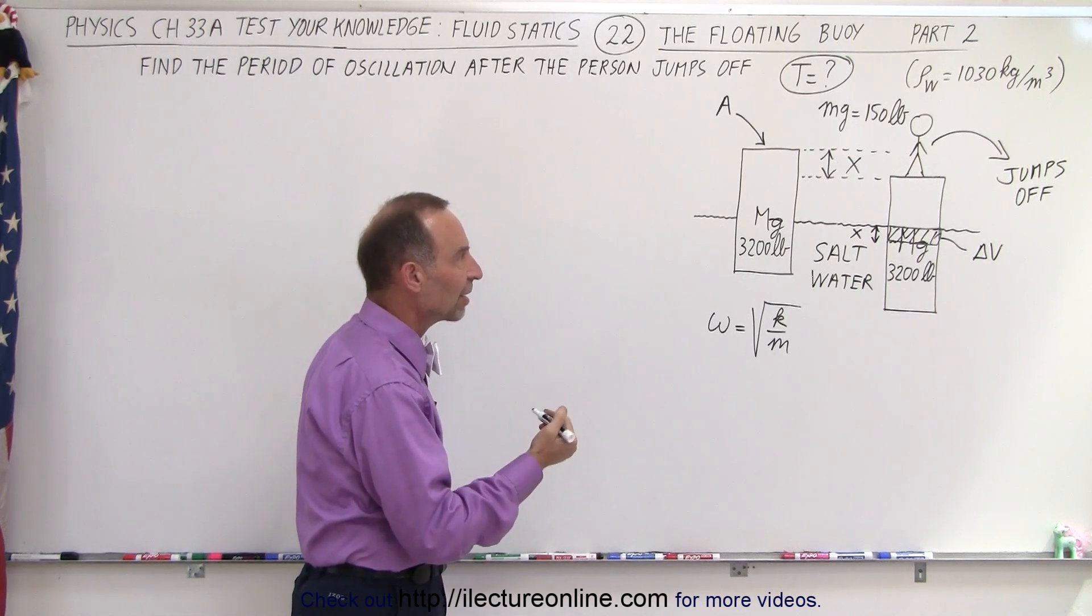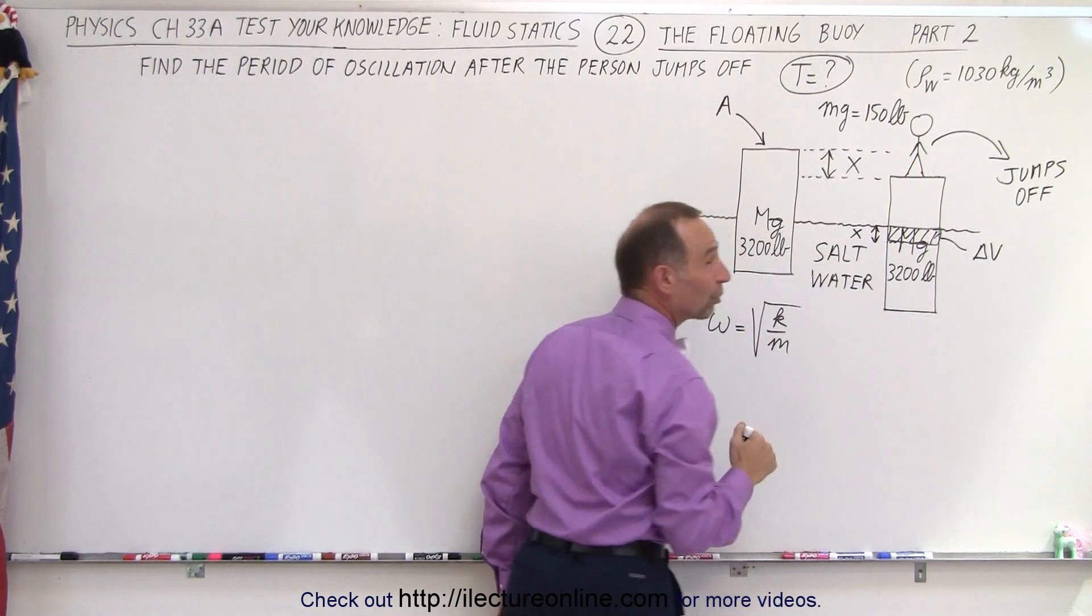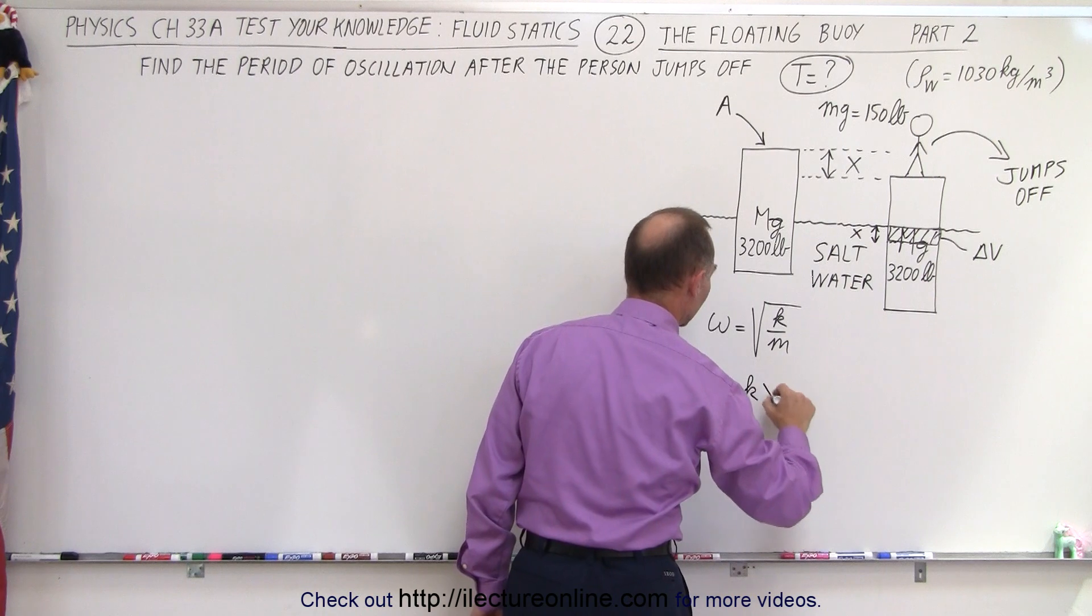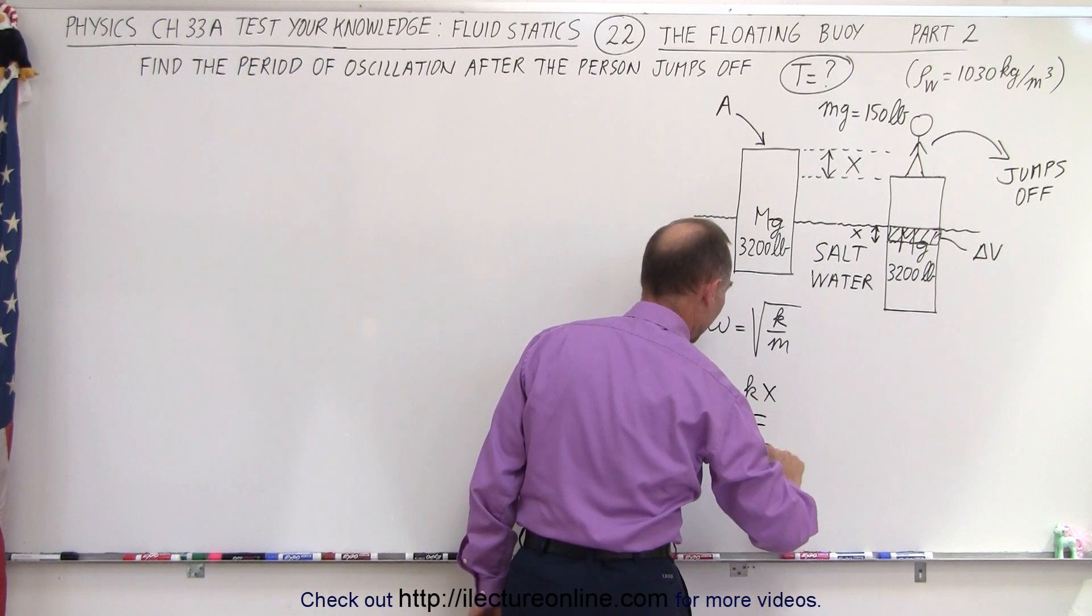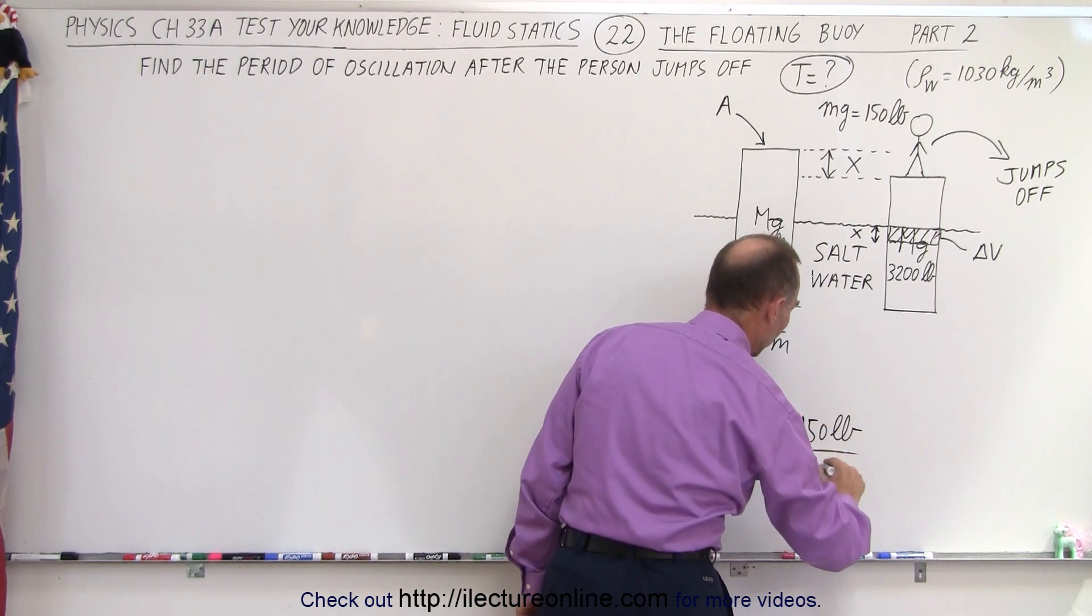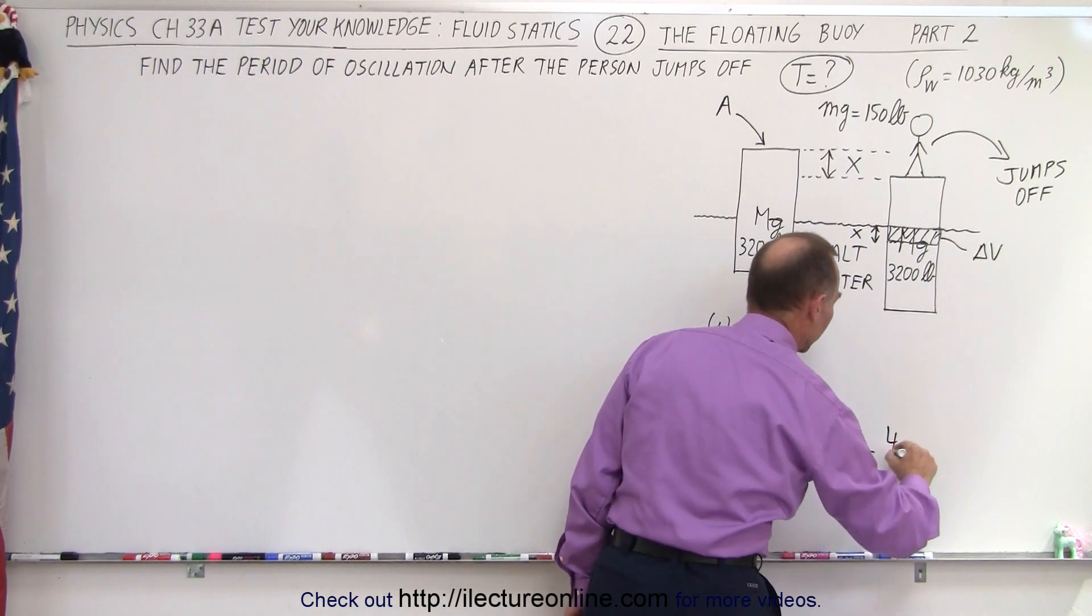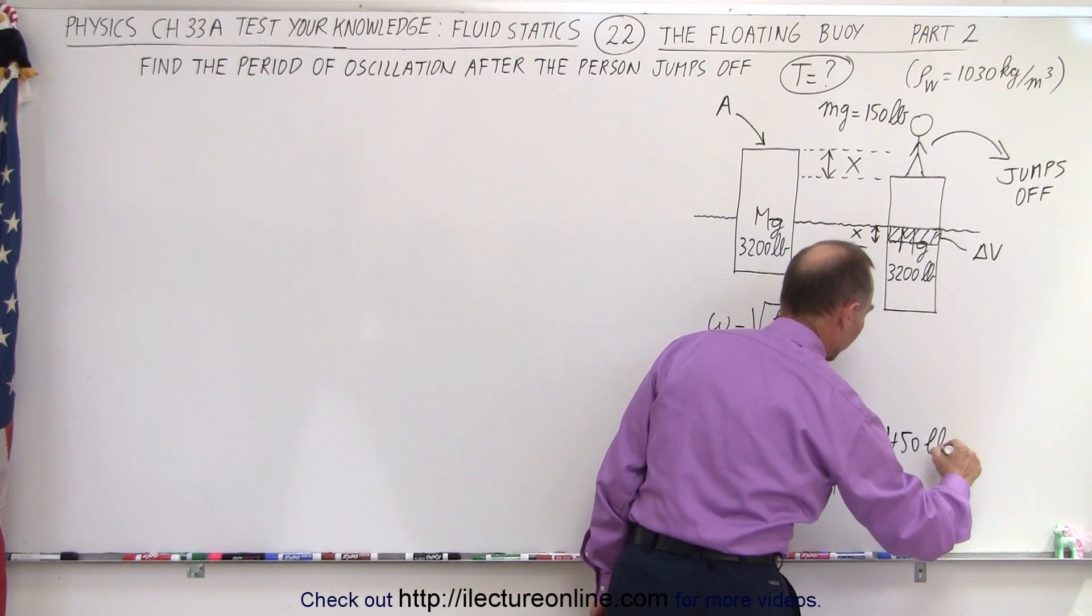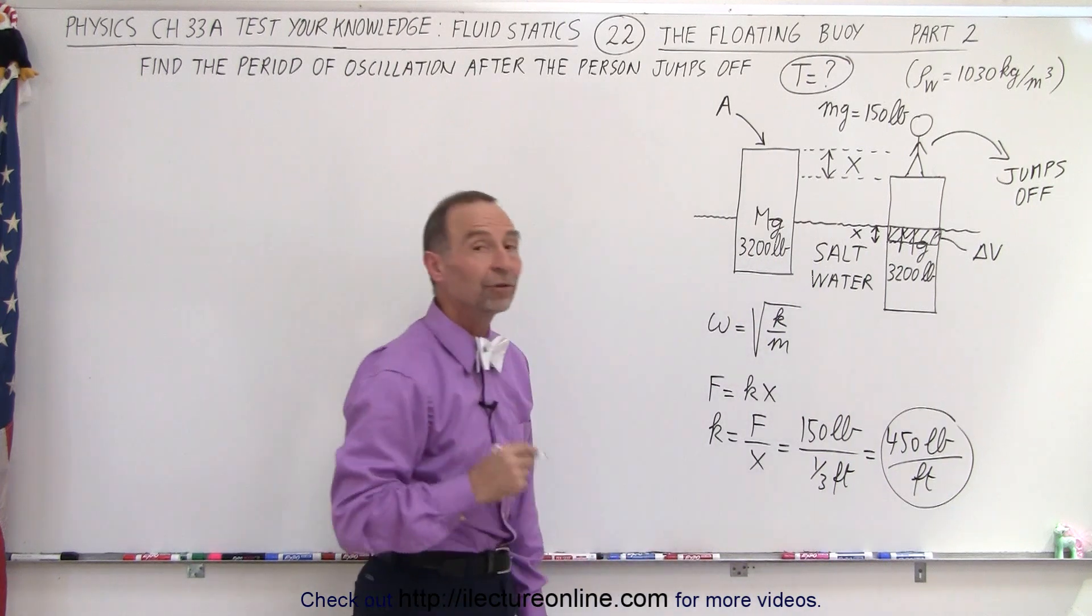Now k can be found by realizing that when the person got on to the buoy, it pushed the buoy down 0.33 feet. So we can say that F equals kx, or k equals the force divided by x. In this case, it would be 150 pounds divided by about one-third of a foot, which means it's about 450 pounds per foot. And so that would be the spring constant of the buoy.